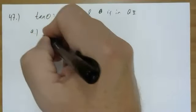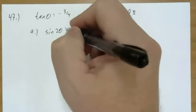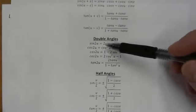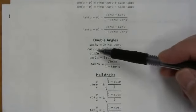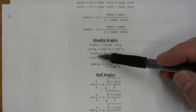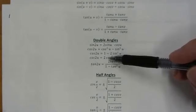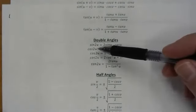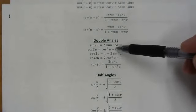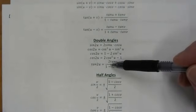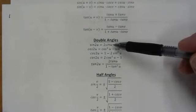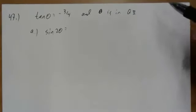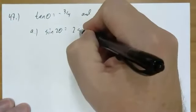The first thing we're asked to determine is sine of two theta. Looking at the formula sheet, we have double angle formulas. Sine of two u equals two sine u cosine u. For cosine of two u there are actually three different formulas, so you can choose which one to use. Then there's the tangent of the double angle. So sine of two theta equals two sine theta cosine theta.